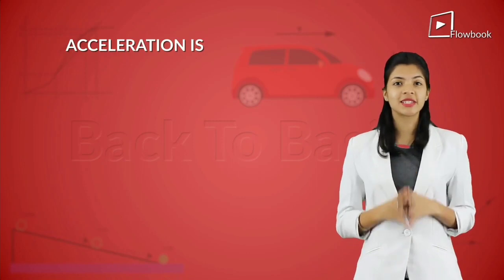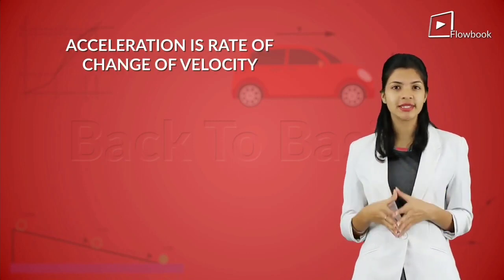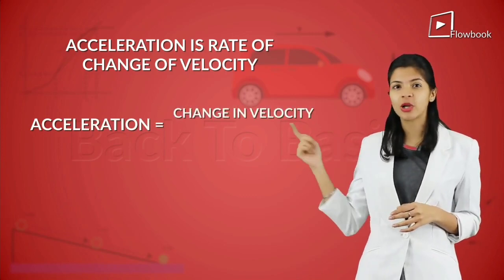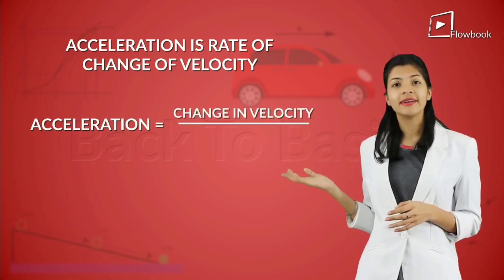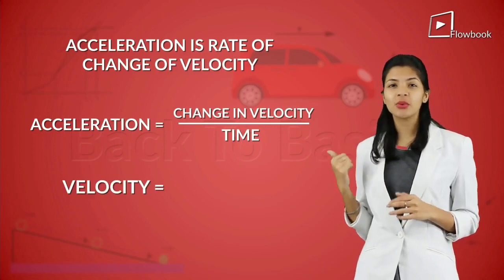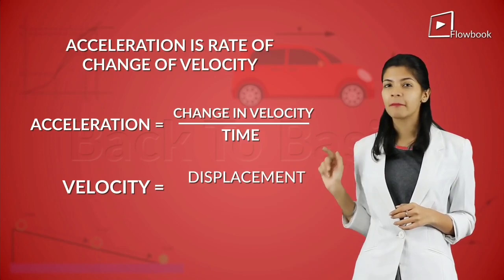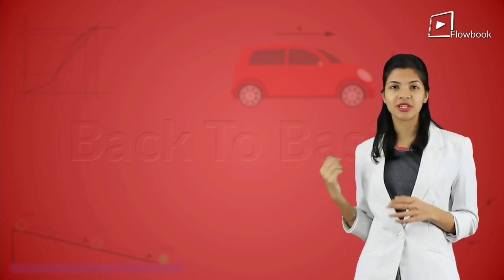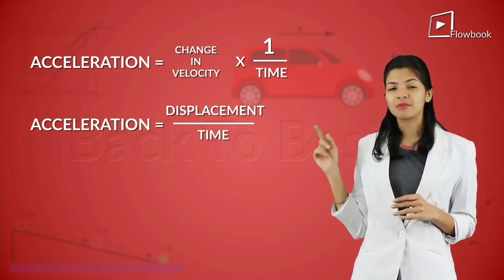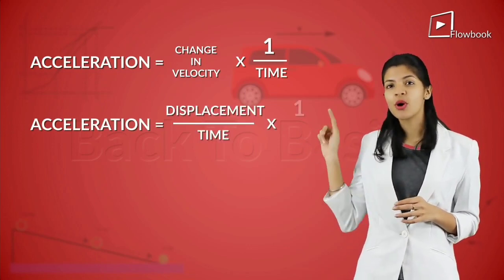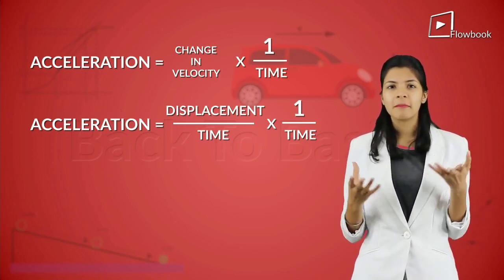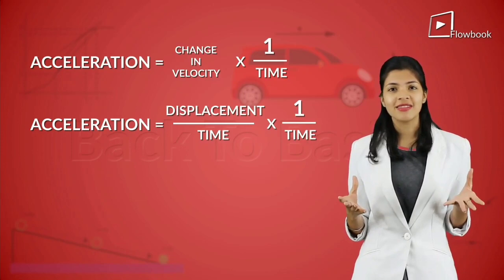Since acceleration is the rate of change of velocity, it can be calculated as change in velocity divided by time. We know that velocity is equal to displacement by time. Putting this in our acceleration formula, we get acceleration is equal to displacement by time into one by time. Displacement is measured in length, and length is in meters.